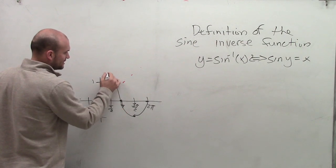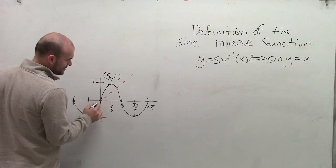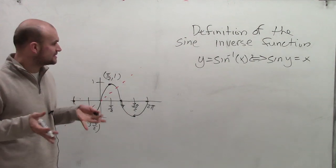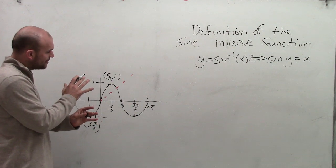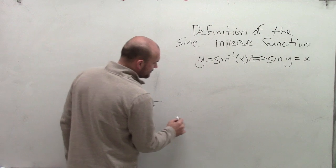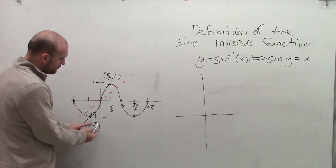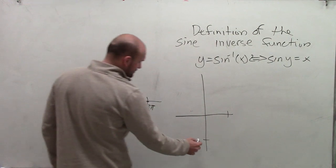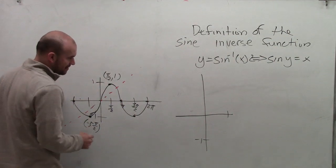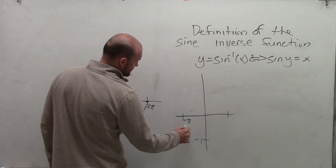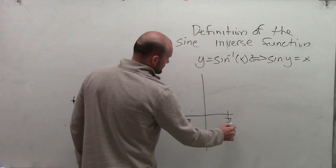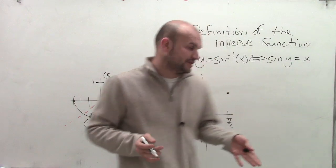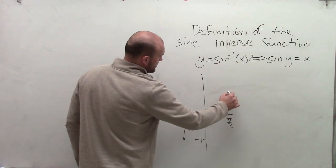Remember that when graphing a function, we have x and y coordinates. So this coordinate is pi halves comma 1, here we have 0 comma 0, and over here we have negative 1 comma pi halves. When I reflect the graph of the sine function over the x-y line and swap my x and y coordinates, rather than having a point at negative 1 comma pi halves, I now have a point at negative pi halves comma negative 1, and another point at pi halves up to 1.